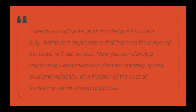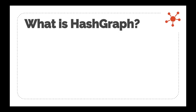Swirls is a software platform created for fully distributed applications that can harness the power of the cloud without servers. We can develop applications with fairness in decision, speed, trust, and reliability — all at a fraction of the cost of traditional server-based platforms. Swirls is the company that created hashgraph. Hashgraph is a consensus algorithm used by that company.